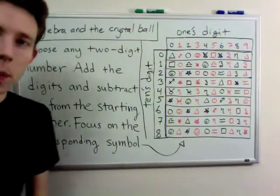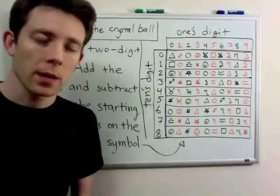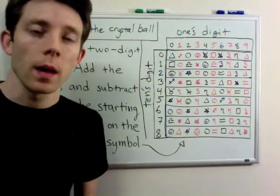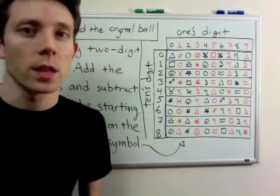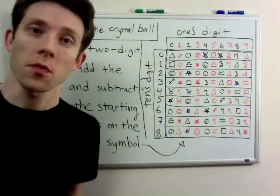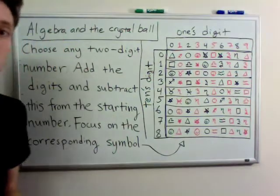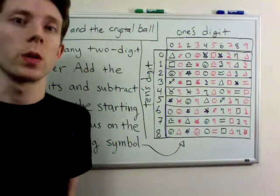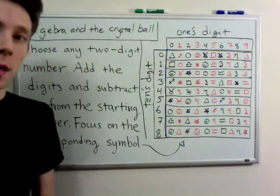So, as a quick example, let's say that I chose the number 23. The digits added together, that's 2 plus 3, gives me 5. And then I can subtract 5 from the original number, 23, and I'll get 18.